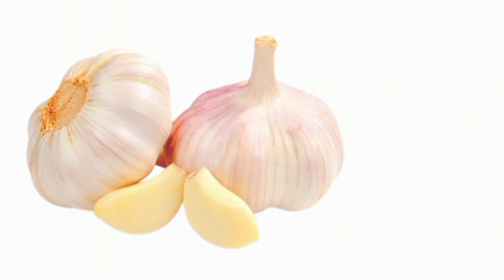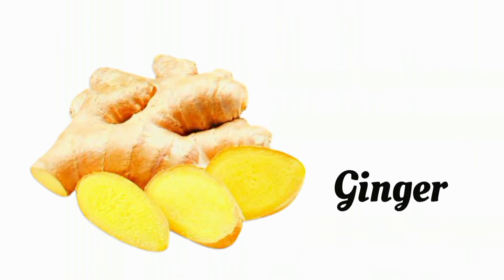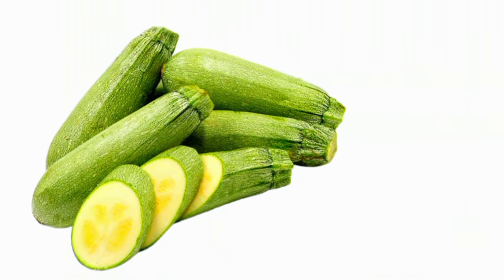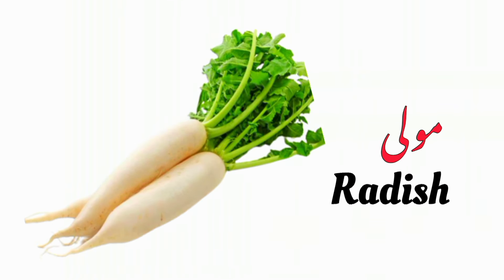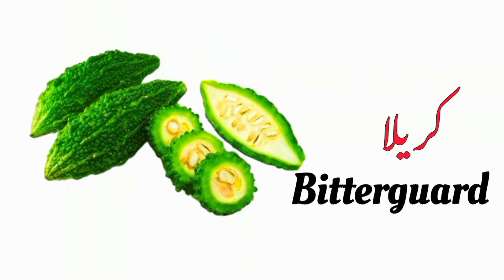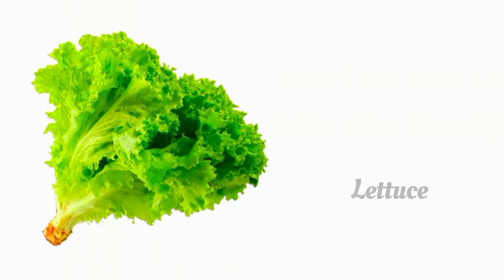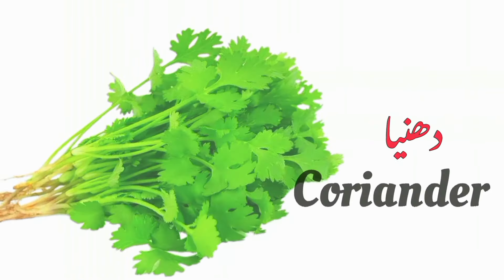Pea — Pea means Matar. Brinjal — Brinjal means Baingan. Red Chilli — Red Chilli means Lal Mirch. Green Chilli — Green Chilli means Hari Mirch. Garlic — Garlic means Lassan. Onion — Onion means Piaz. Ginger — Ginger means Adrak. Zucchini — Zucchini means Tori.